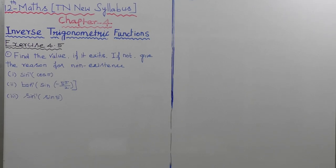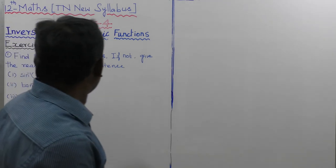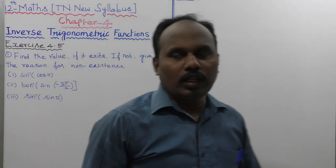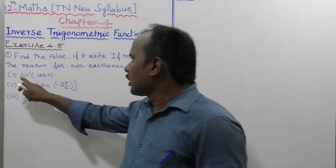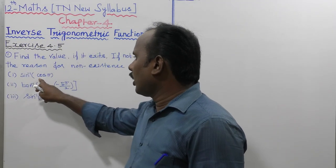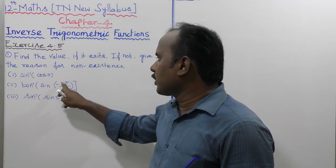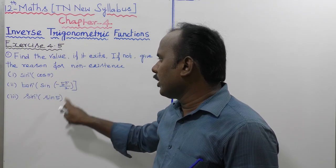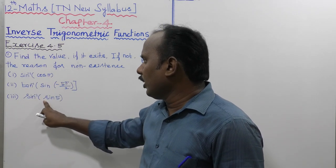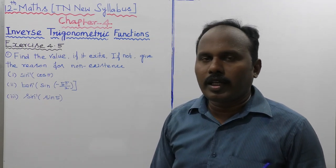Find the values if they exist; if not, give the reason for non-existence. First one: sin inverse of cos pi, tan inverse of sin of minus 5 pi by 2, sin inverse of sin pi.